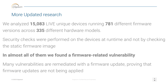We've also done more recent research analyzing UEFI firmware specifically. We analyzed just over 15,000 unique devices — these devices had their firmware pulled from the SPI flash, where UEFI firmware among other things is stored on modern computers. Across 781 different firmware versions and 335 different hardware models, we performed security checks on these devices while they were running in the wild. In almost every case across all 15,000 devices, we found a firmware-related vulnerability. Many of these vulnerabilities could be remediated with a firmware update, but this proves that firmware updates are not being applied.